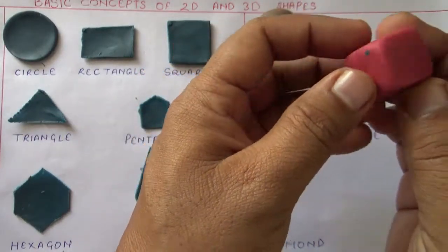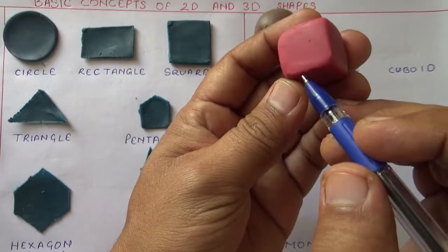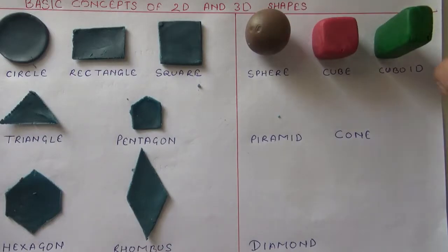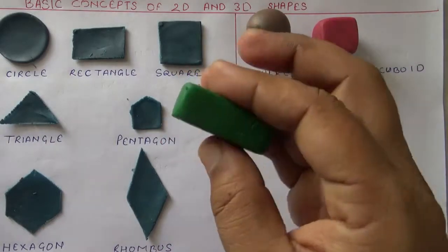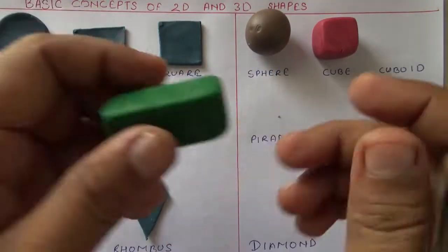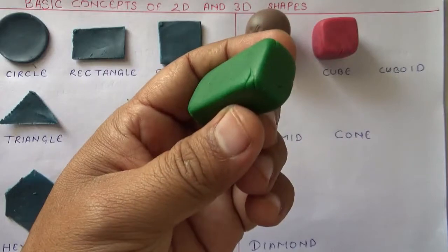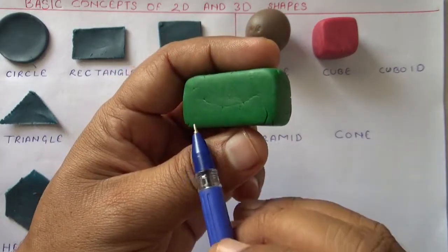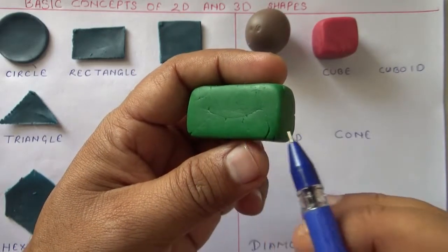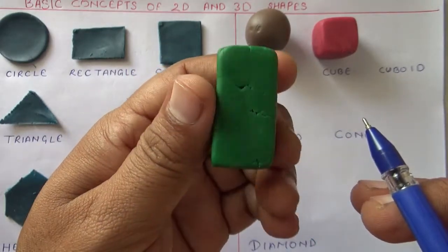Just as a square has all sides equal, a cube has all sides equal — length, breadth, and height. A cuboid is a three-dimensional shape with length, breadth, and depth, where all three measurements are different.